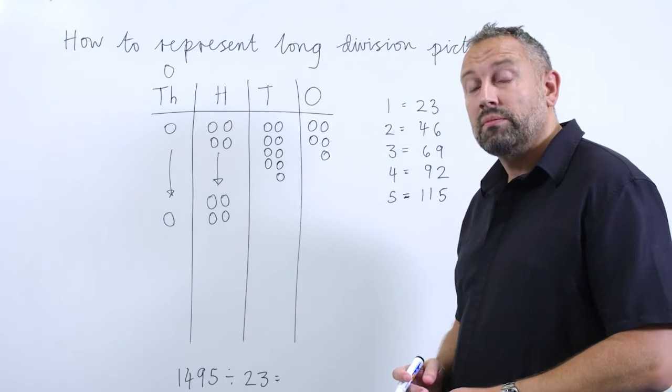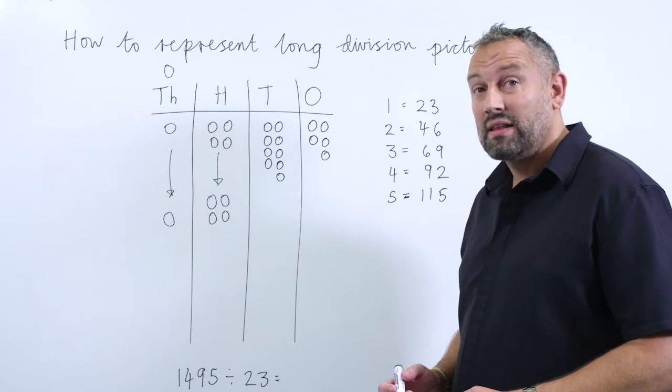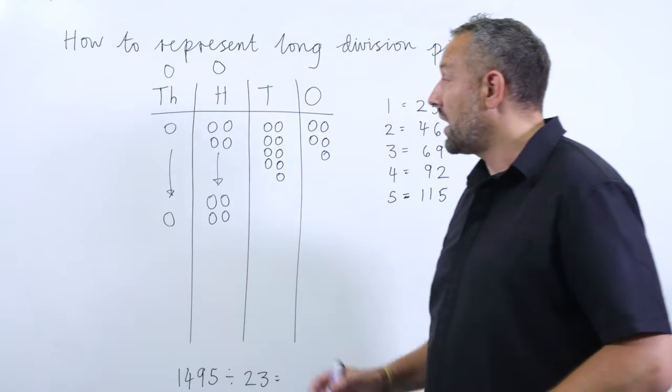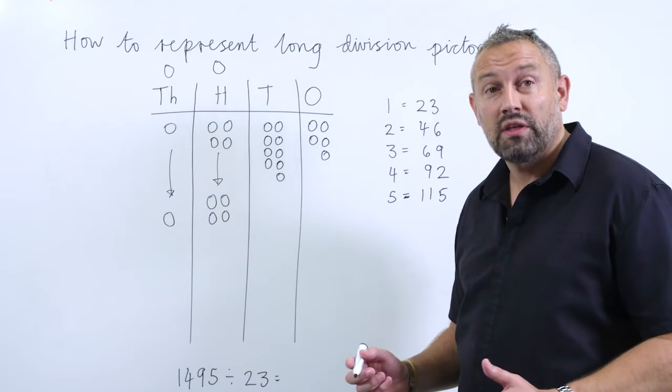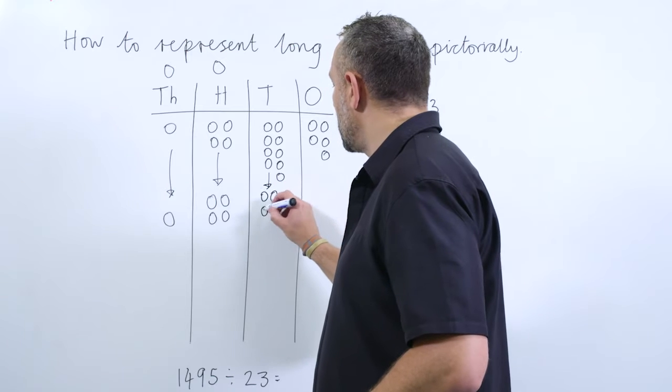We now have 1400, so how many groups of 23 can we make out of 14? Again, the answer is 0. So now we have to move to the tens, the next column to the right, of which we have nine tens.